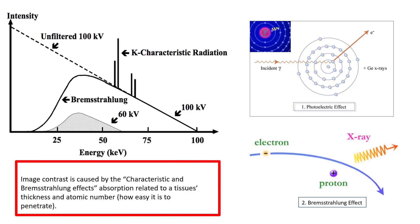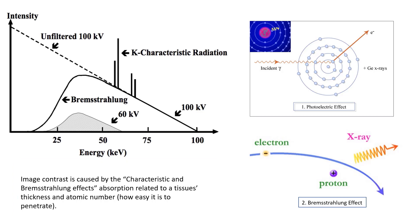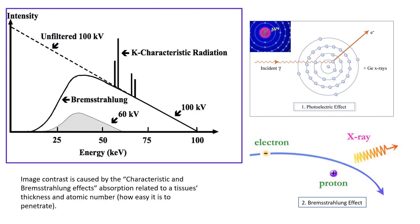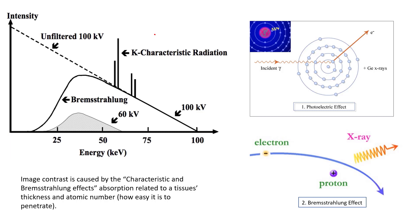Image contrast is caused by the characteristic and Bremsstrahlung effects, or the absorption related to a tissue's thickness and atomic numbers, meaning how easy it is to penetrate. We see a graph showing the characteristic radiation and the Bremsstrahlung radiation, and how it relates to the intensity of the kVp, which is 100 kVp, and the keV, which is the average energy of the beam.